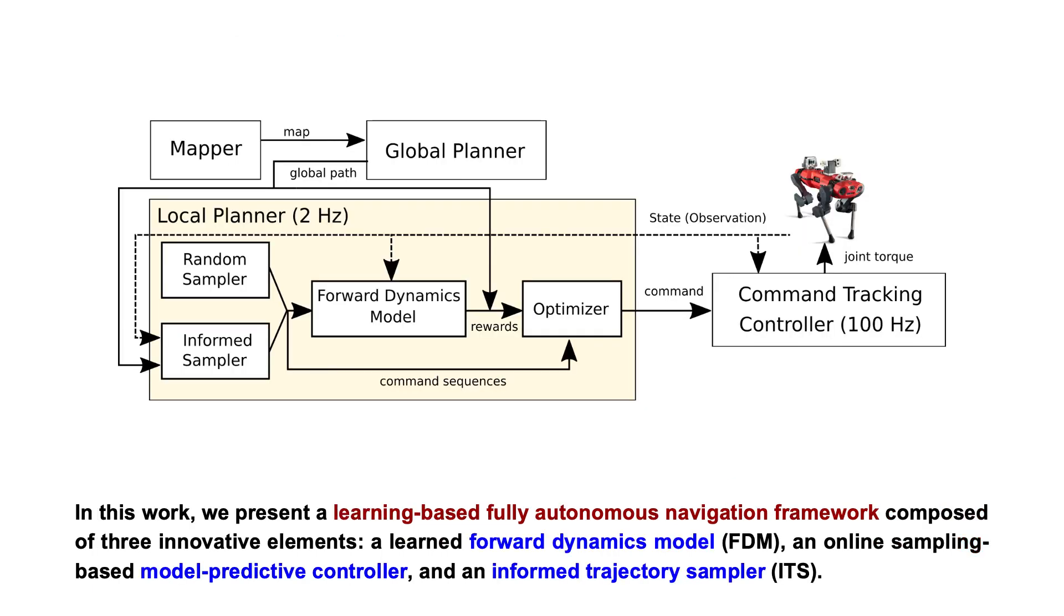In this work, we present a learning-based fully autonomous navigation framework composed of three innovative elements: a learned forward dynamics model, an online sampling-based model predictive controller, and an informed trajectory sampler.